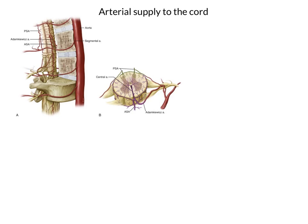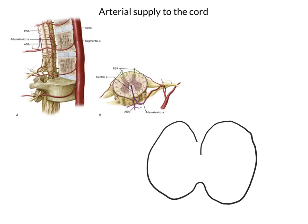Now let's have a think about the territories of the anterior and posterior spinal arteries. The anterior spinal artery supplies the anterior two-thirds of the spinal cord, whereas the posterior spinal artery supplies the posterior third. Let's draw that out in a little bit more detail. Here is our section through the spinal cord, with our grey matter.